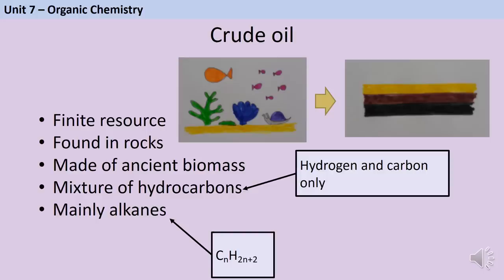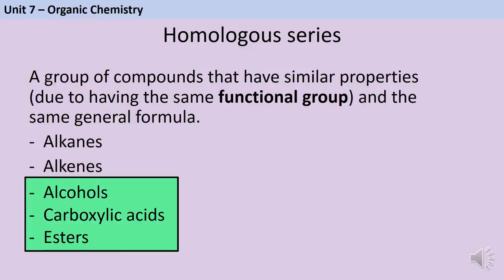The second topic is organic chemistry, starting with crude oil. Crude oil is a finite resource found in rocks, formed from ancient biomass — mainly plankton buried in sediment over millions of years under pressure, forming fossil fuels. It is a mixture of hydrocarbons: compounds made of hydrogen and carbon only. These hydrocarbons are mainly alkanes, which are an example of a homologous series — compounds with similar chemical properties because they share the same functional group and the same general formula.